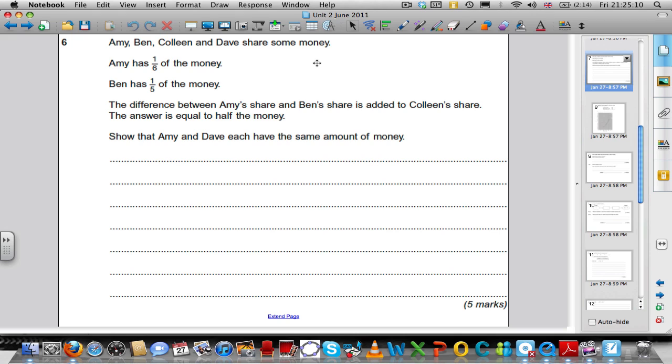Continuing onwards. This question may have seemed quite complicated, but if you extracted the information sensibly from this question, you would have found it wasn't too bad. It says, Amy, Ben, Colleen and Dave share some money.